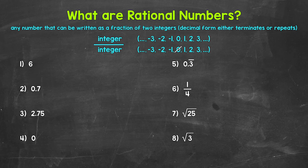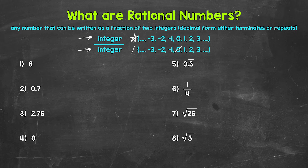This may all seem confusing at first, but as we go through our examples this will all make a lot more sense. Any number that can be written as a fraction of two integers — where the numerator must be an integer and the denominator must be an integer — that's going to be a rational number. Remember, integers include positive and negative numbers and zero.